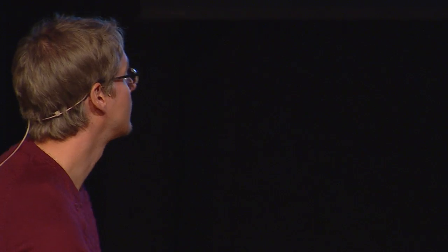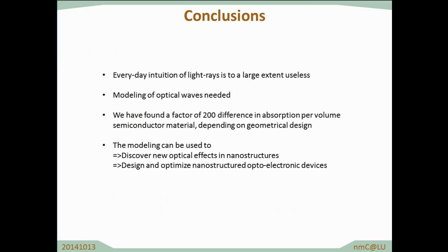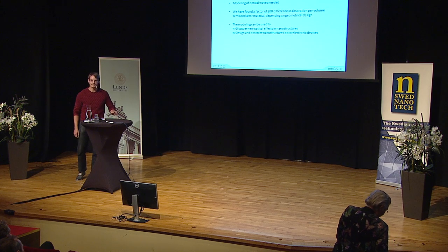As a conclusion: the everyday intuition we have of optics — that works for microscopes, for telescopes, for mirrors — simply doesn't work for our nanostructures. Instead, we need to use this kind of optical modeling. We have found a huge 200 times factor in material consumption, and this modeling can be used for discovering new optical effects and for designing and optimizing nanostructures in solar cells, light emitting diodes, photodiodes, and any of the electronic devices.